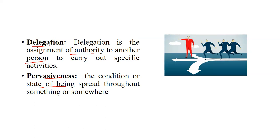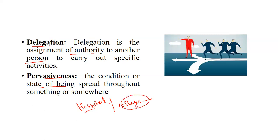Pervasiveness means a single organization has a single goal and a single purpose. For example, in a hospital or a college, the aim of the college is to produce good students who contribute to society. In a hospital, the aim is to care for the maximum number of patients and maintain their normal quality of life. Different organizations have different purposes.